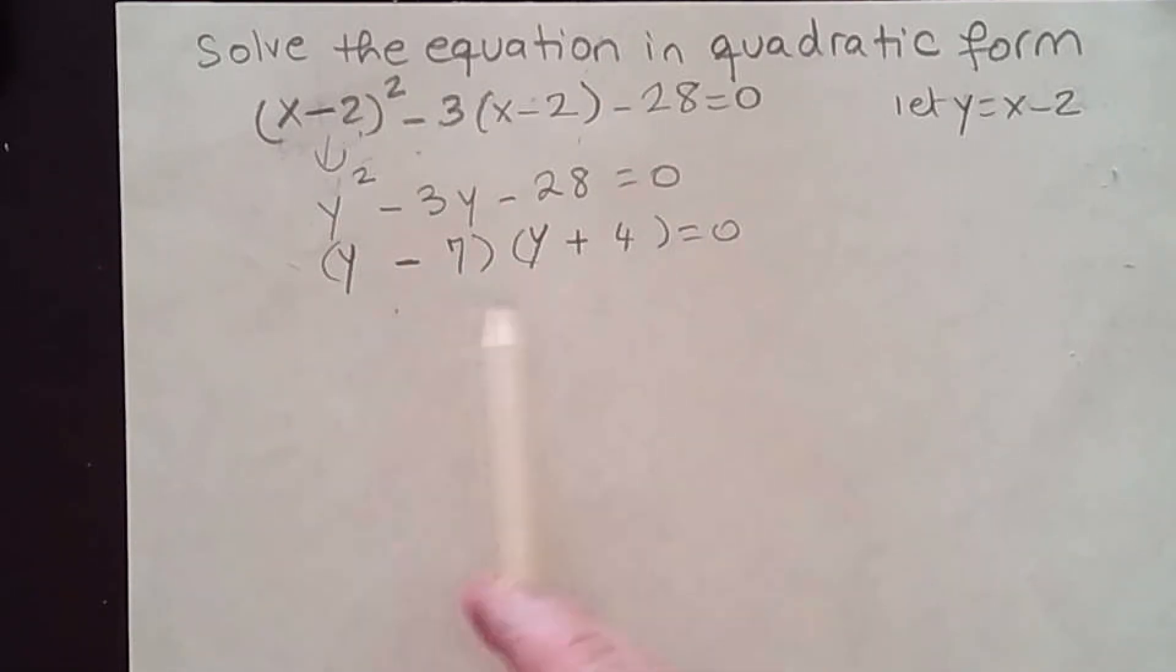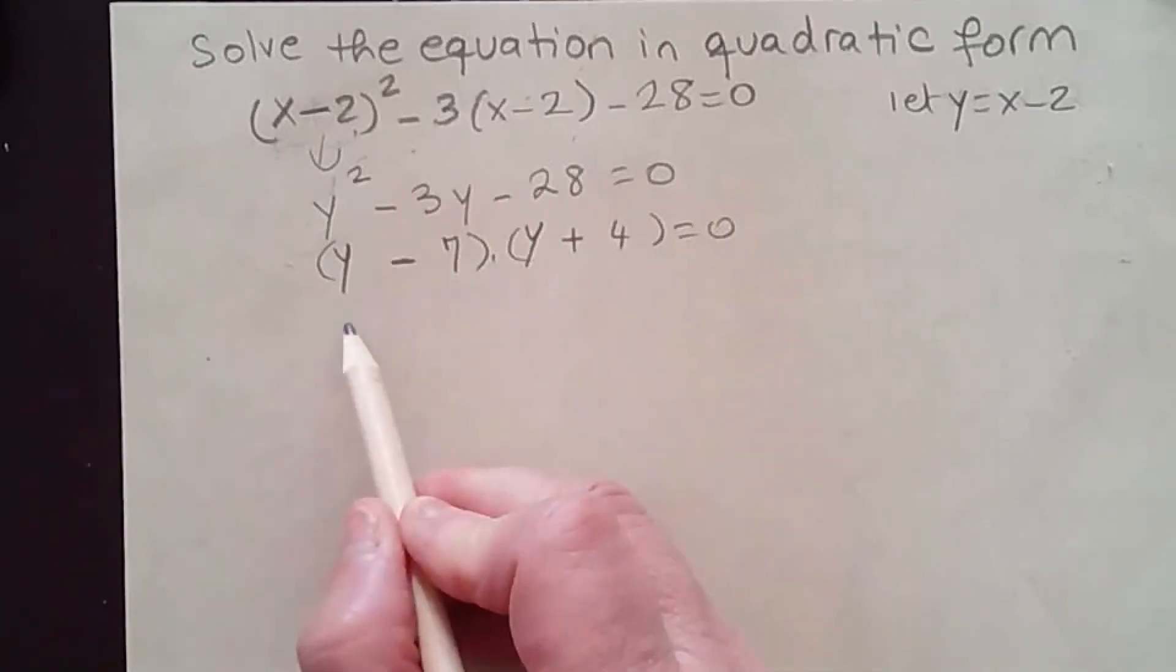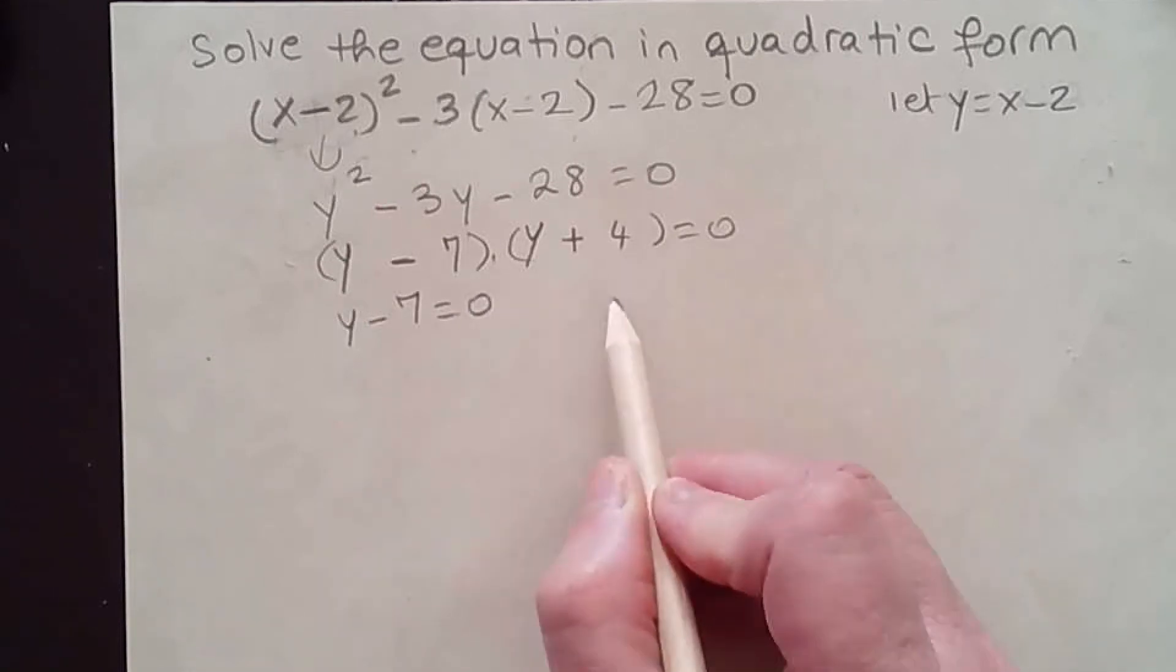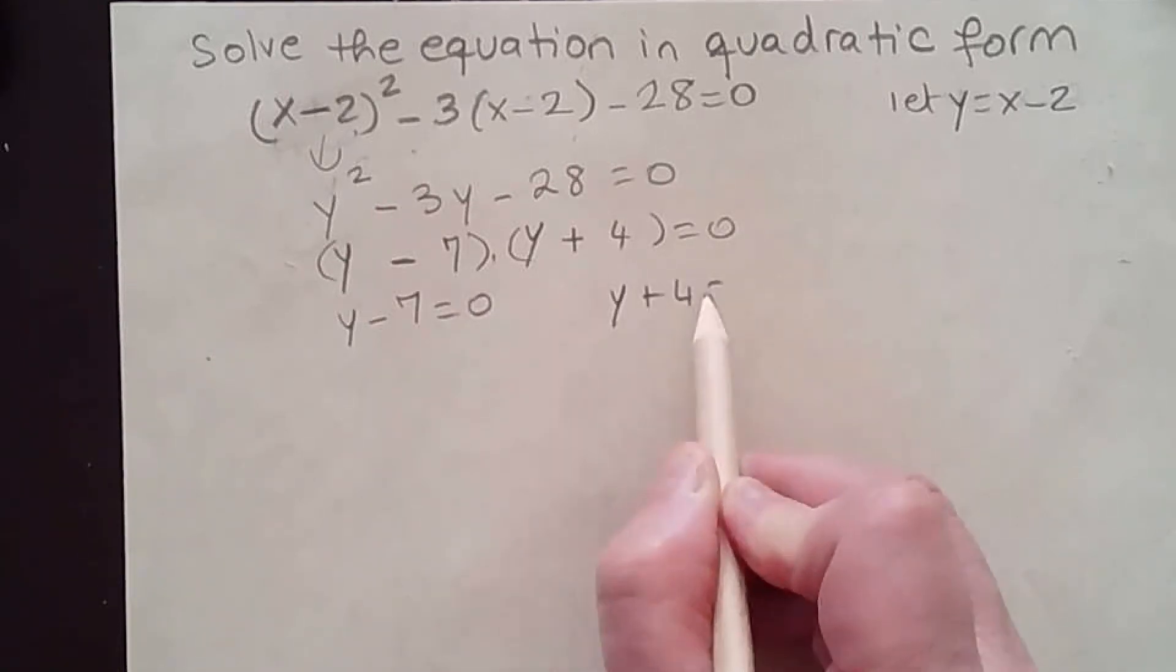So now I factor it. Now I can solve that. I get (y - 7) = 0 and (y + 4) = 0. Either this or this.